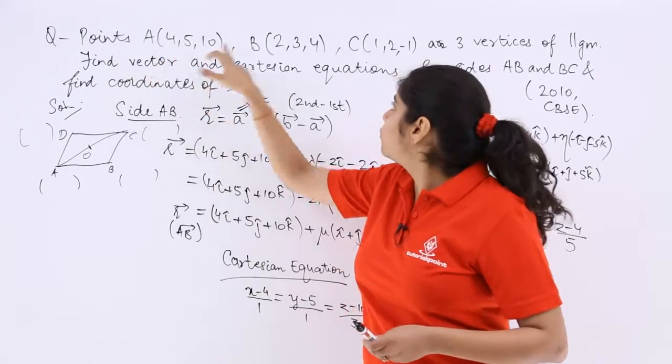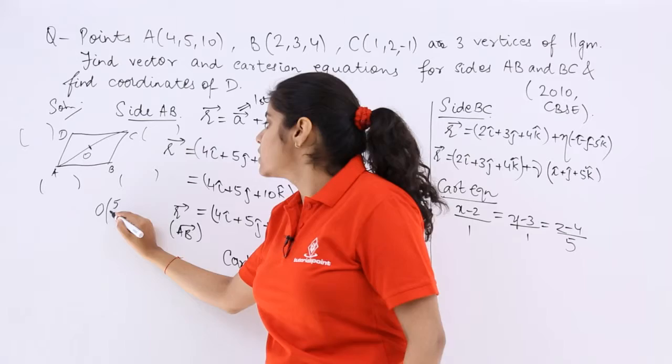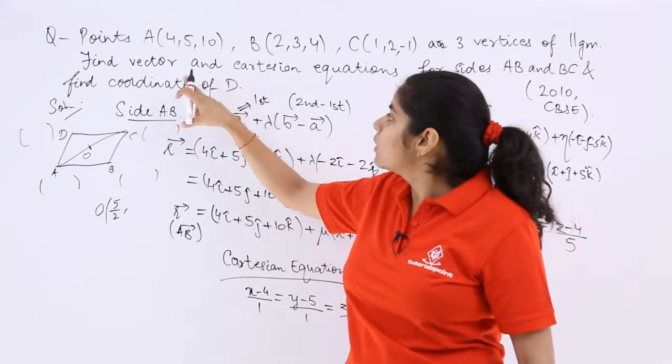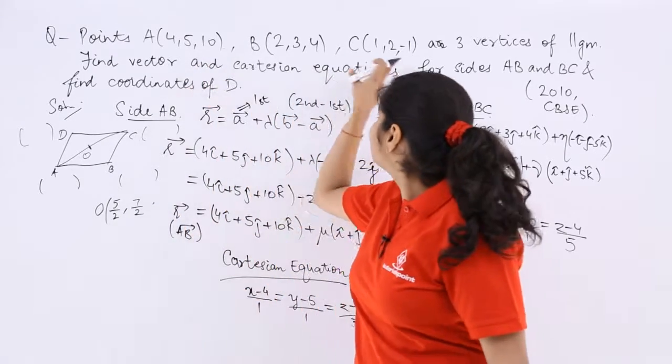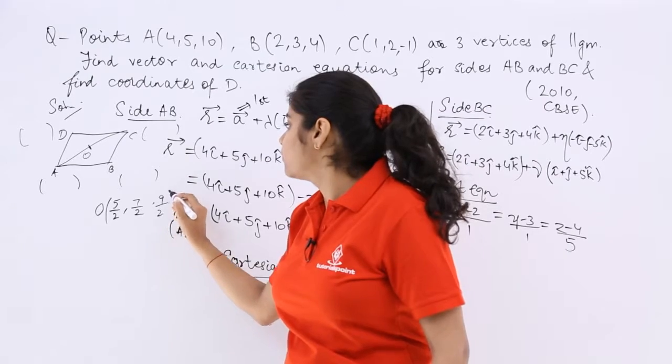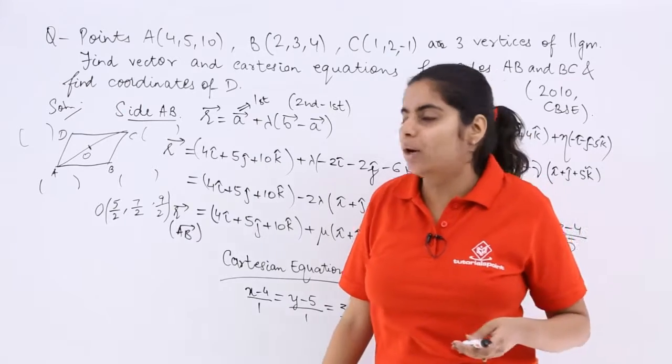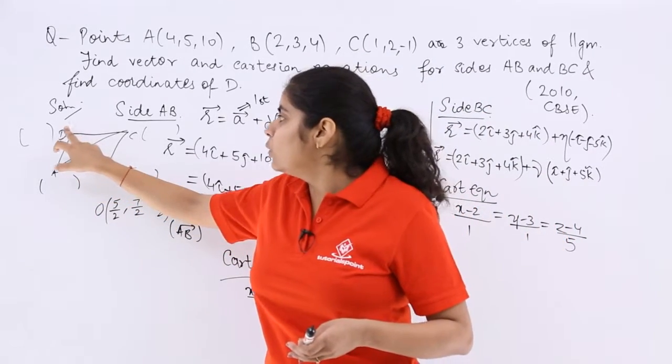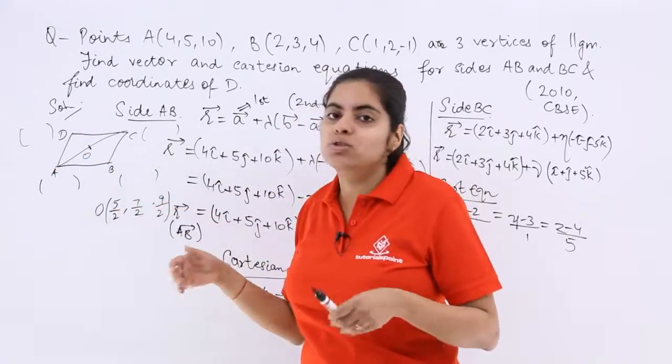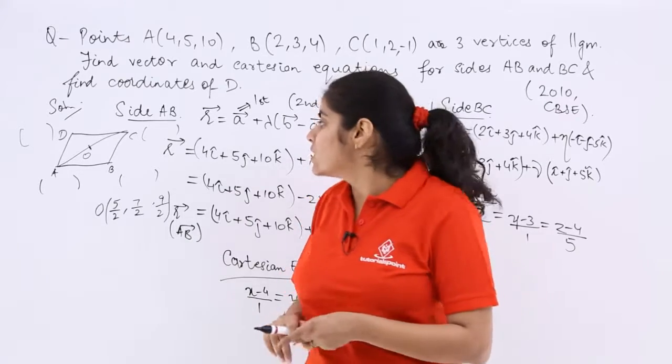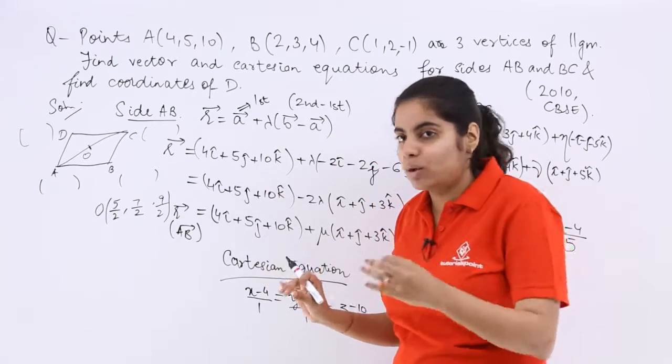Let's find out O when you have A and C. So 4 plus 1 is 5, so it is 5 by 2. Then 5 plus 2 is 7 by 2. Last but not the least, 10 minus 1 is 9 by 2. So O is found out. Once you have found out O, which is the midpoint, then you know midpoint is equal to the vertices. So x1 plus x2 upon 2 and likewise. So what should be your D like?